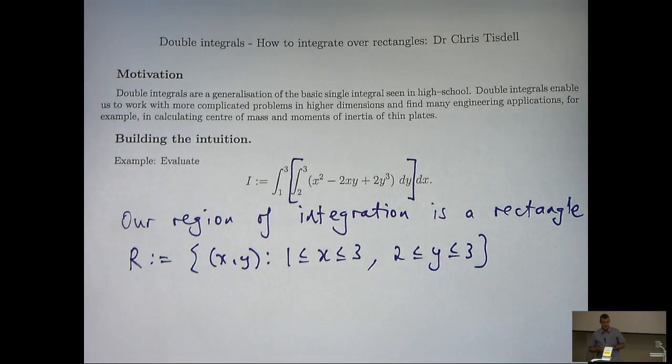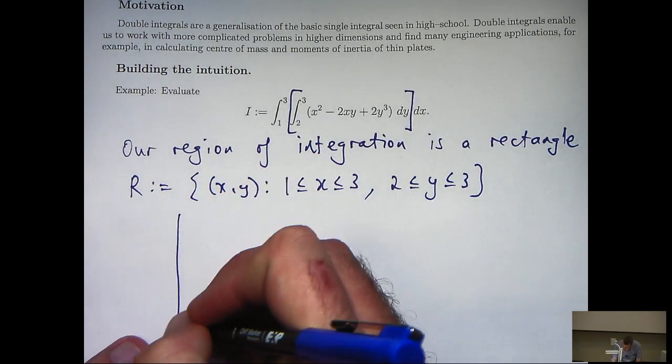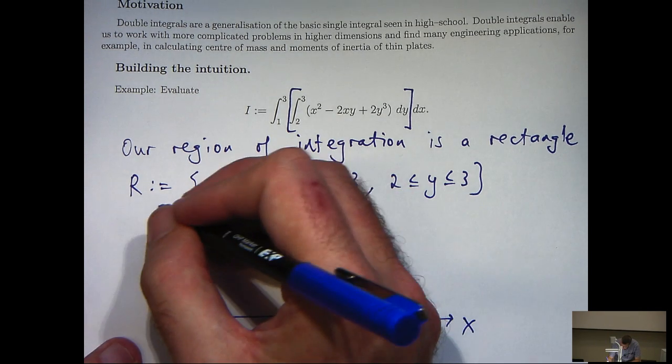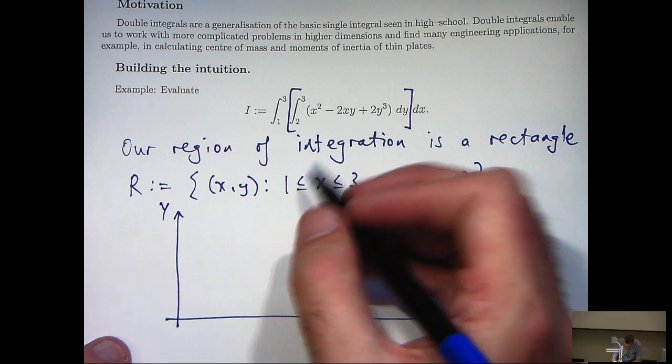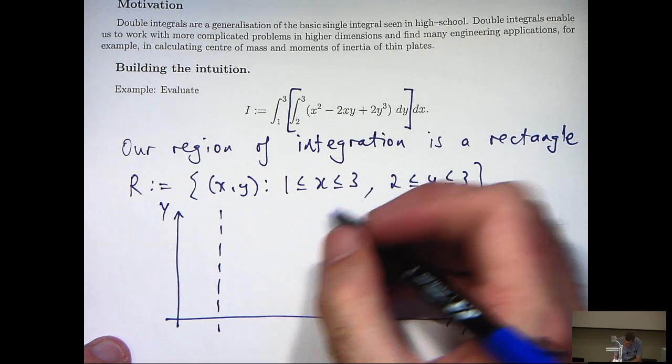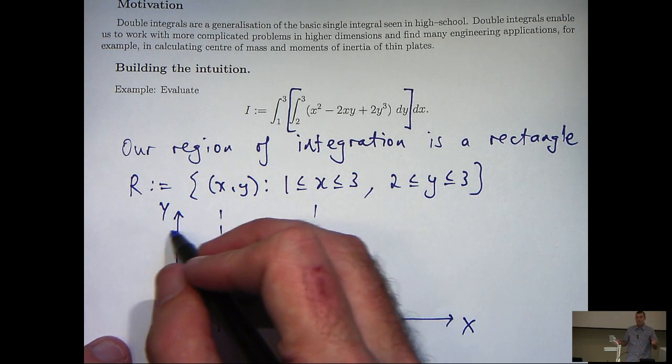So if I just draw in my region, my little rectangle in the xy plane, what I'm going to do is draw in the line x equals 1, x equals 3, and the line y equals 2, y equals 3.